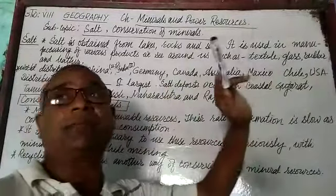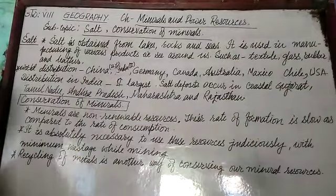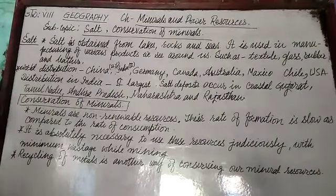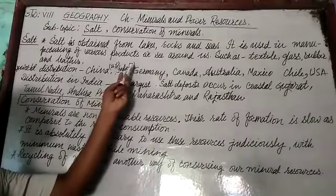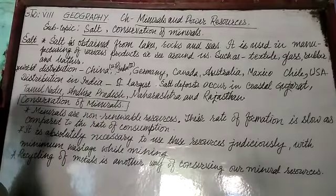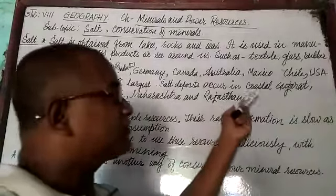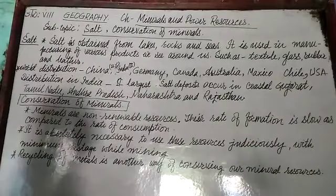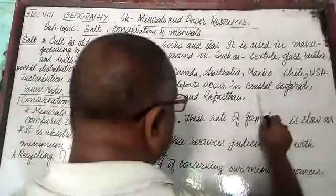Other major salt-producing countries include Australia, Mexico, Chile, and USA. When we look at India, India is the second largest producer after China. Salt deposits in India occur mainly in coastal regions.